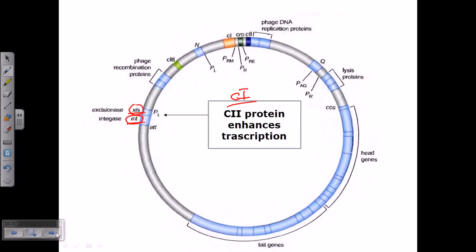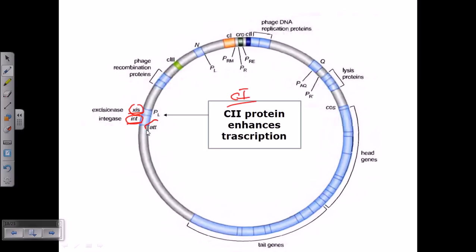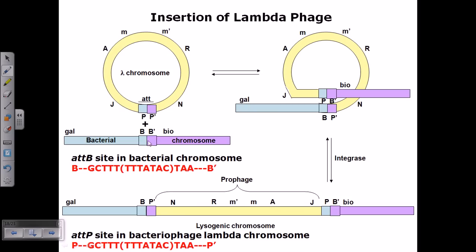There is a site called attP — we also find attP and attB sites in this process. attB is present in the bacterial chromosome and attP is present in the phage chromosome. Both attP and attB share a similar stretch of sequence in both bacteria and virus, making recombination between the lambda chromosome and the bacterial chromosome possible.